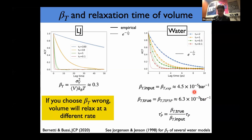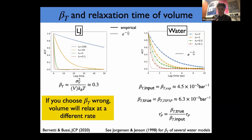Another interesting observation is that if you make tau_P very small, the volume will not relax as quickly as the exponential would predict. This is because when you change the volume, particles have to rearrange. If you do it too quickly, particles don't have time to rearrange and the volume cannot relax at the predicted rate.